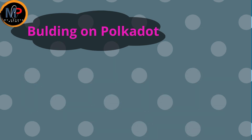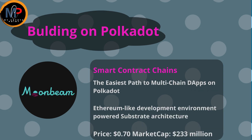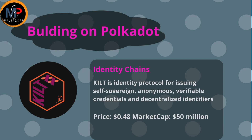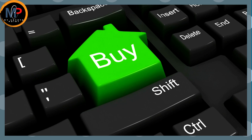Let's look at teams building on Polkadot. Under Smart Contract Chains: Asta connects multiple layer-one blockchains to Polkadot through the Asta network; Moonbeam provides an Ethereum-like development environment powered by Substrate architecture. Under Identity Chains: Kilt is an open-source blockchain protocol for issuing claim-based, verifiable, revocable, and anonymous credentials in Web 3.0. Under Financial Chains: Acala is a decentralized finance network powering the stable coin AUSD ecosystem.